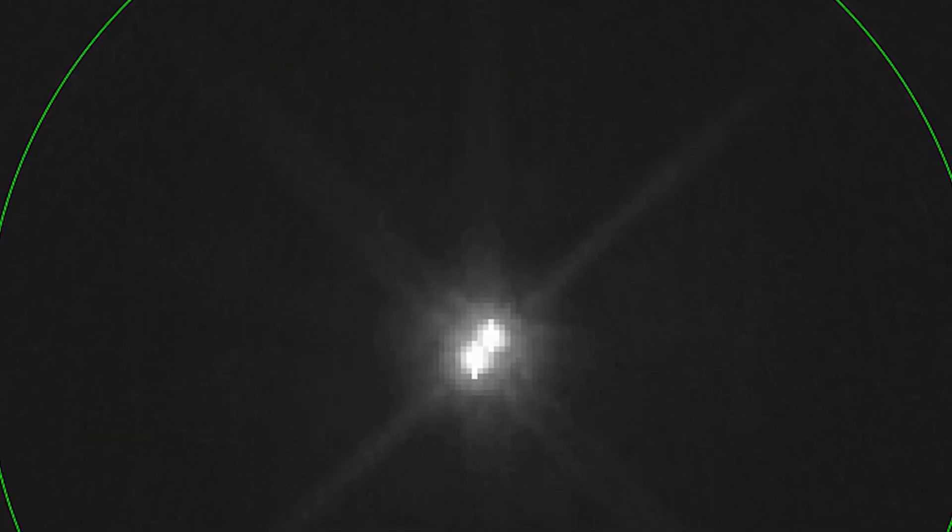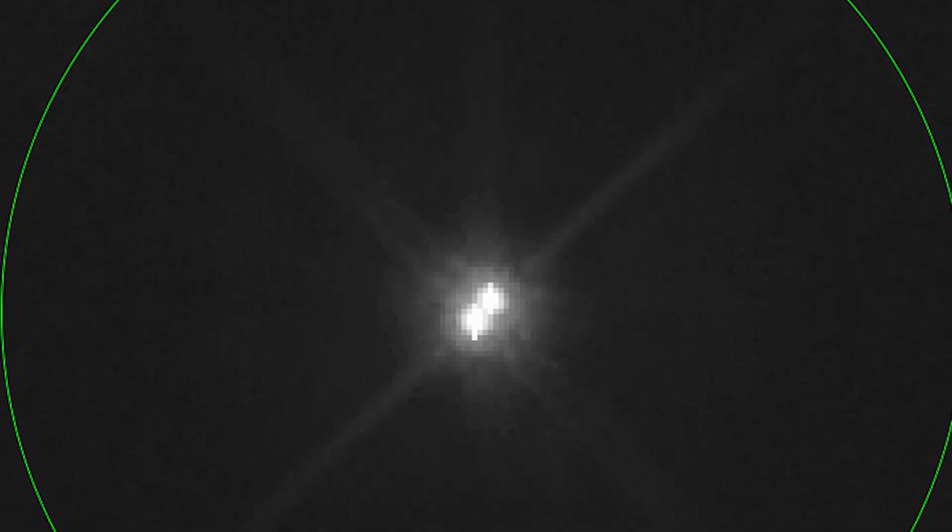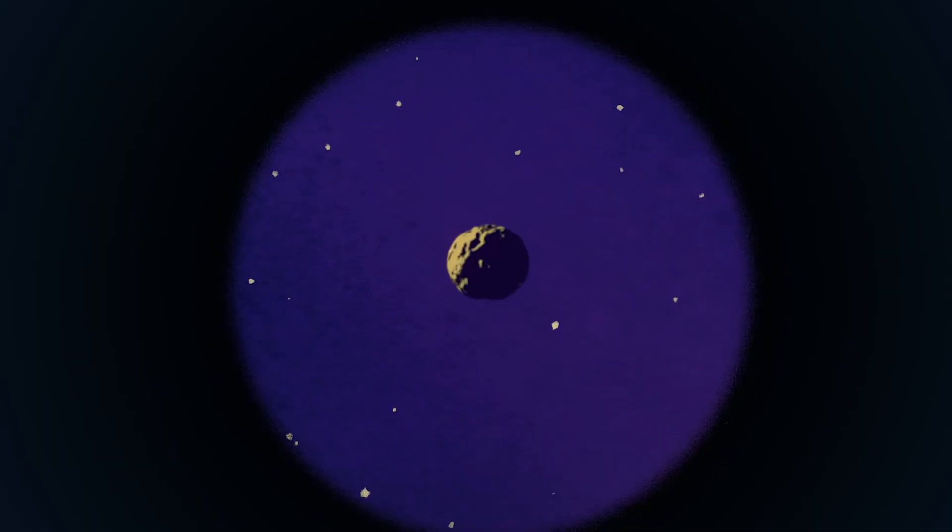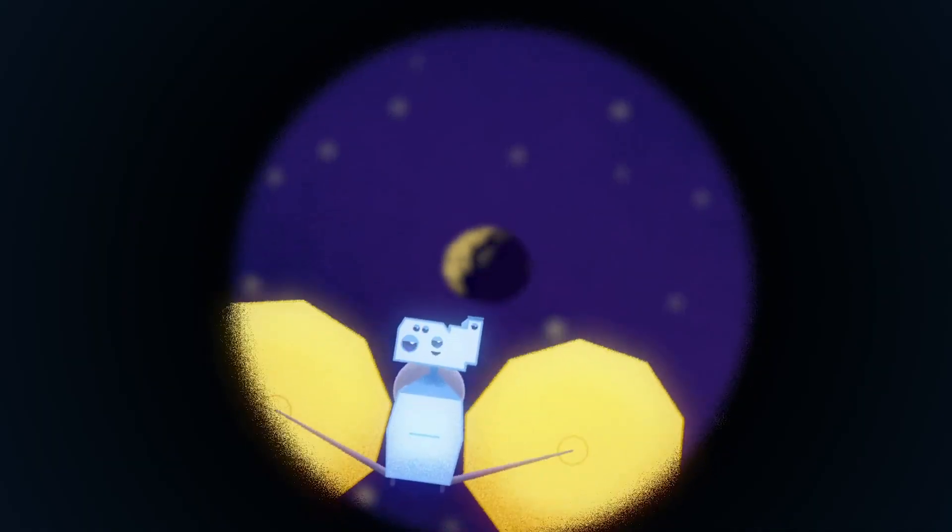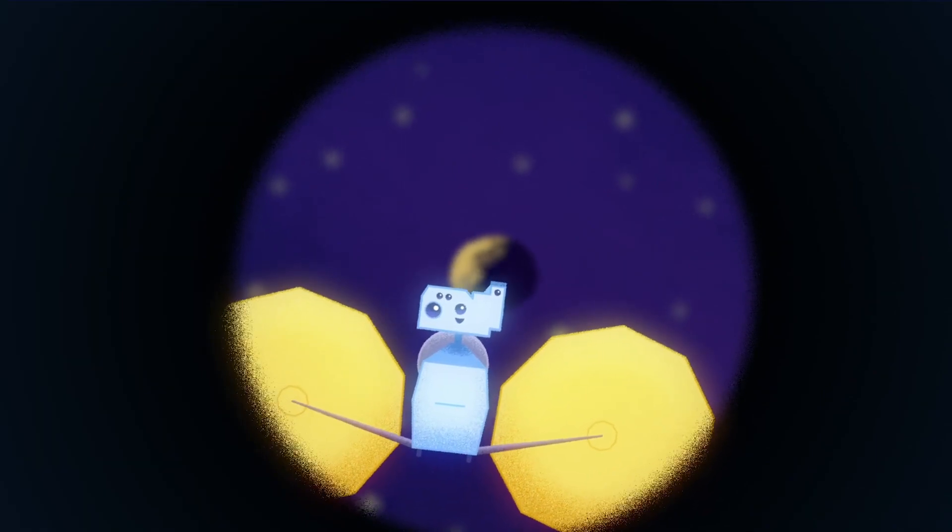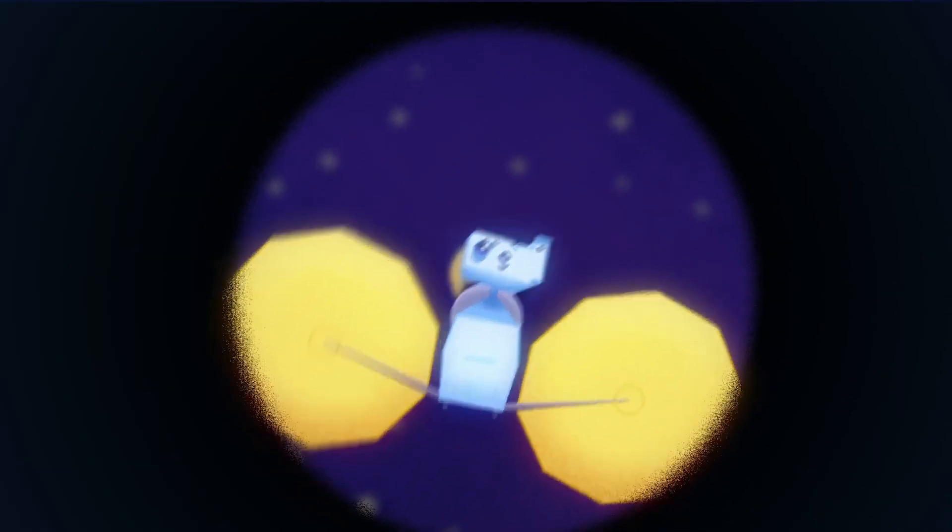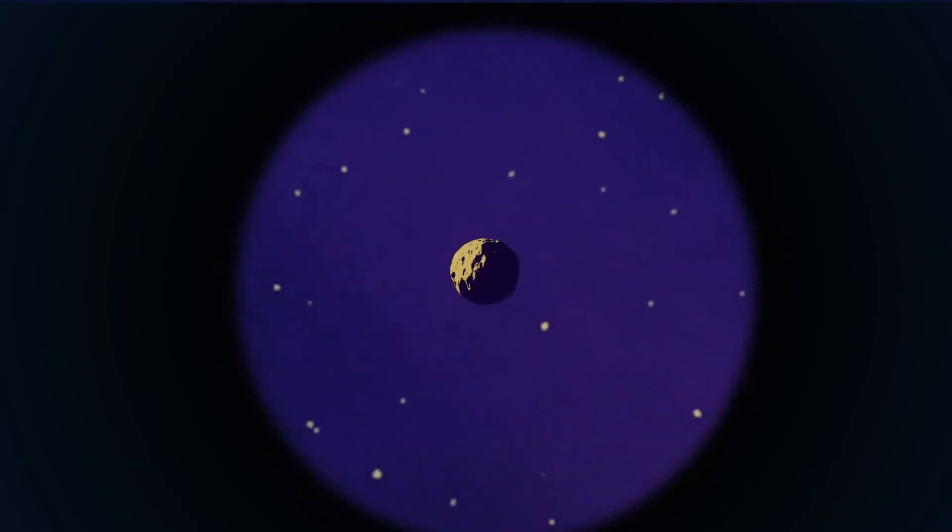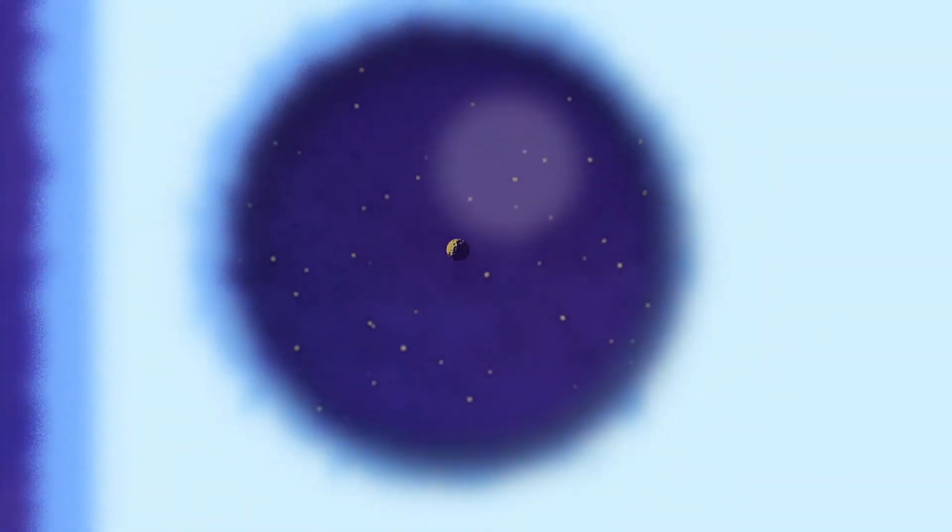From Earth the Trojan asteroids are just a point of light. You can't tell one part of the Trojan asteroid composition versus another part. Lucy is going to be able to get that detail close up by taking this spacecraft and these instruments to the Trojan asteroids. We'll be able to see how the surface composition varies across the Trojan asteroids.